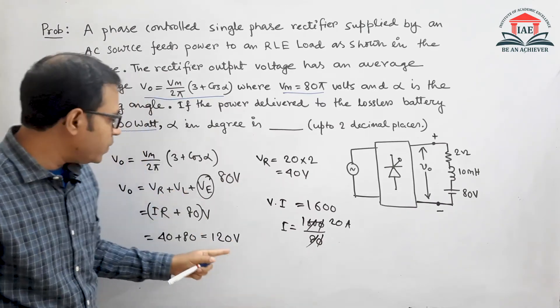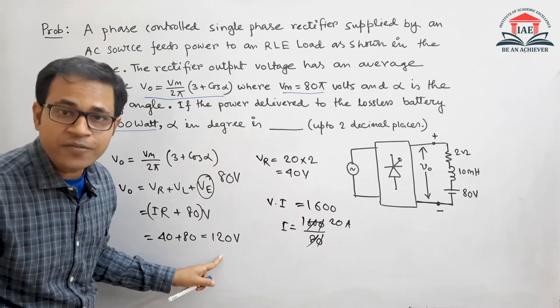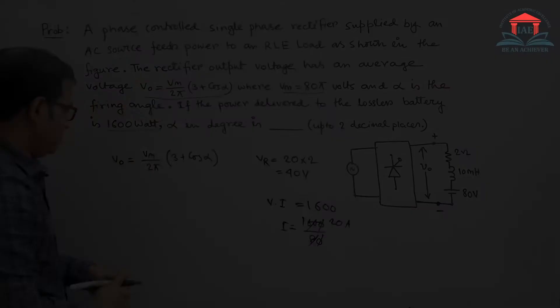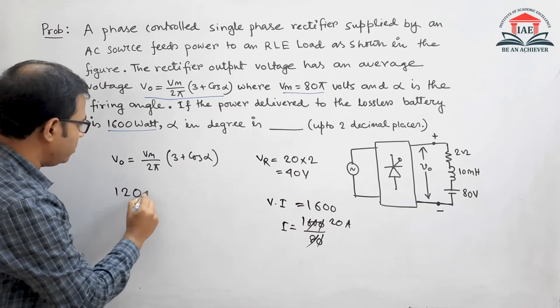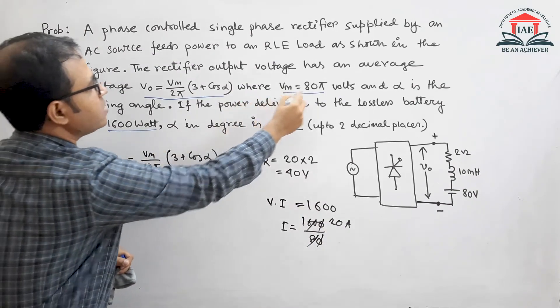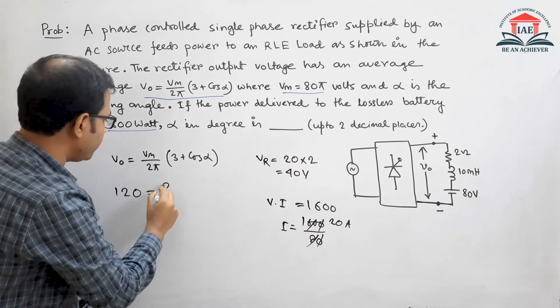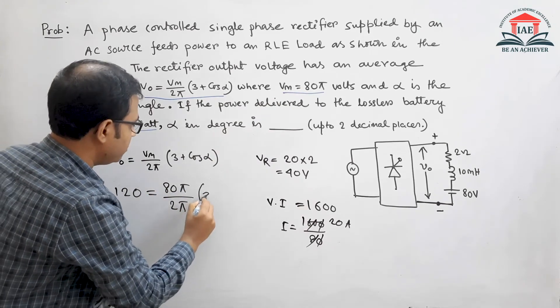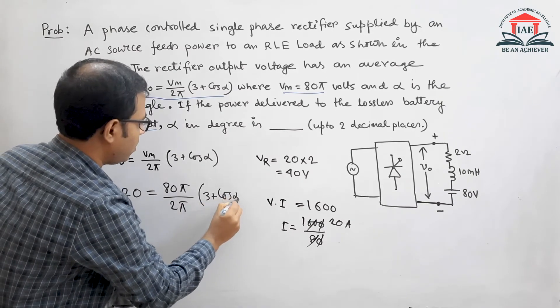Now what we will do is put this value of 120 volts into this expression, then we will find cos α. Putting this value, it will be 120 equals Vm, given as 80π, so 80π divided by 2π times (3 plus cos α).